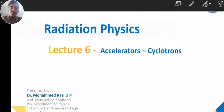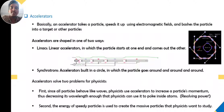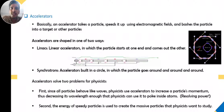Welcome to the Radiation Physics course. We are here with lecture six on accelerators and cyclotrons. Basically, an accelerator takes a particle, speeds it up using an electromagnetic field, and bashes the particle into a target. The purpose is to accelerate the particle to as high a speed as possible — that is the main purpose of any accelerator.